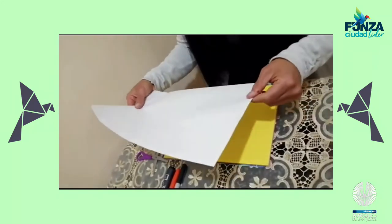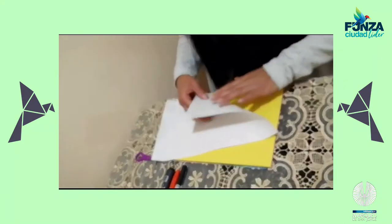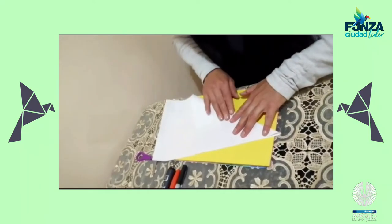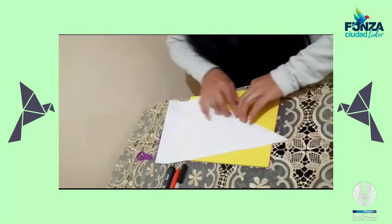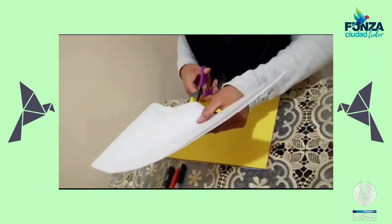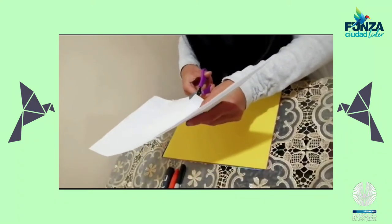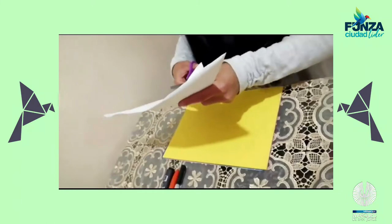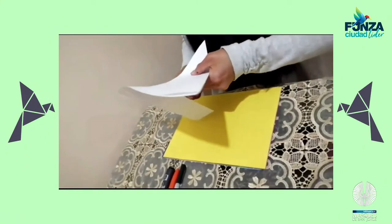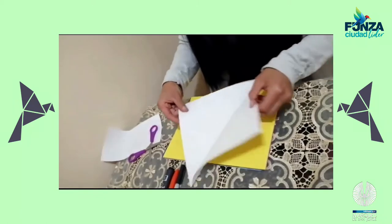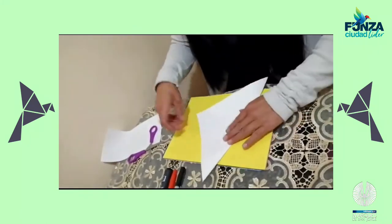Vamos a tomar una hoja y vamos a hacer un triángulo para obtener un cuadrado. Lo vamos a repasar con los dedos por todo el corte y vamos a retirar la parte que nos sobra. Y así ya tenemos un cuadrado.